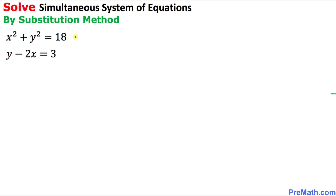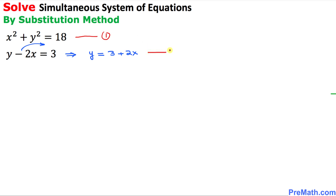I'm going to call the very first equation as equation number one. As far as the second is concerned, I am going to isolate y — that means this negative 2x is going to go on the right hand side. So this equation simply becomes y equals to 3 plus 2x, and I am going to call this equation number 2.